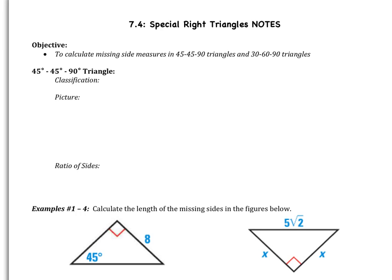Welcome, geometers, to section 7.4, which is special right triangles. Today we have one objective: we're going to calculate missing side measures in 45-45-90 triangles and also in 30-60-90 triangles.